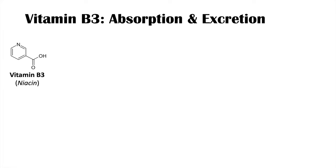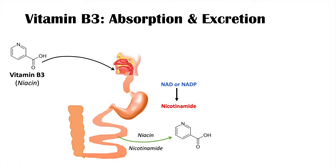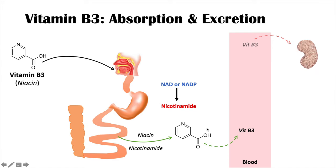Vitamin B3 is absorbed and excreted as follows. We get it from dietary sources and hepatic synthesis, and we need both to maintain adequate amounts. When ingested, it enters the gastrointestinal tract. If it's in the form of NAD or NADP, it must be processed to nicotinamide before absorption. It is mostly absorbed in the small intestine, though some can be absorbed from the stomach, in the forms of nicotinamide and niacin. It then enters the bloodstream and is eventually excreted by the kidneys in the urine.